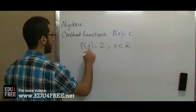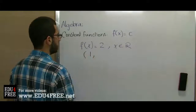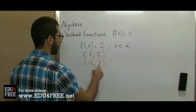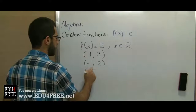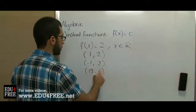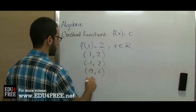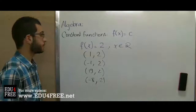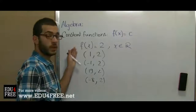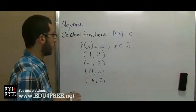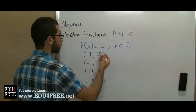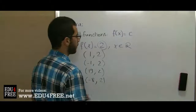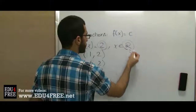For example, when x = 1, y = 2. When x = -1, y = 2. When x = 19, y = 2. When x = -8, y = 2, and so on. To graph this function, all we need to know is the constant c and the interval to which x belongs.